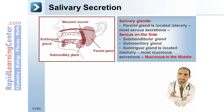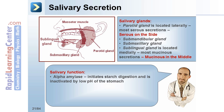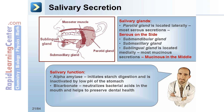Now let's take a closer look at salivary secretion. The salivary glands include the parotid gland, which is located laterally and has the most serous secretions — you can remember their location with the mnemonic 'serous on the side.' There are also the submandibular gland, submaxillary gland, and the sublingual gland, which is located medially and has the most mucinous secretions — remembered by 'mucinous in the middle.' Salivary function includes alpha amylase, which initiates starch digestion and is inactivated by the low pH of the stomach; bicarbonate, which neutralizes bacterial acids in the mouth; and mucins or glycoproteins, which aid in the lubrication of food.